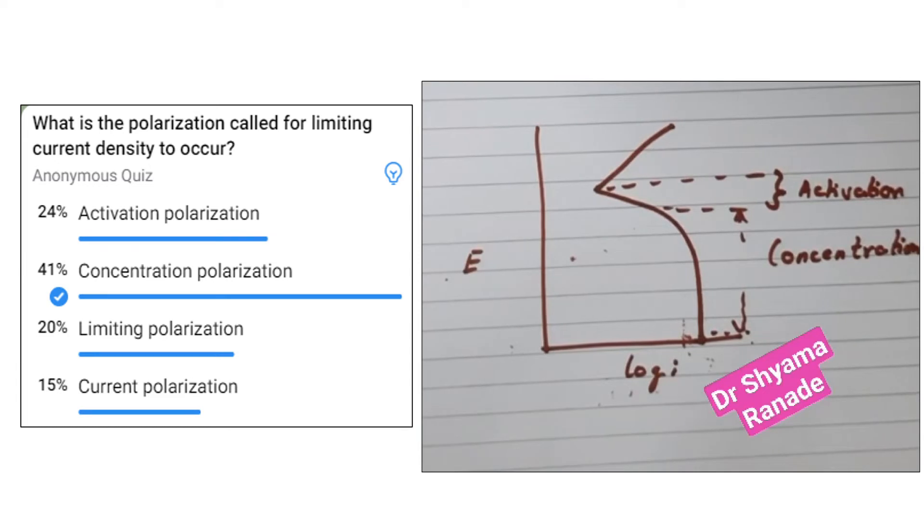The next question is, when does this concentration polarization happen? What are the likely conditions of this polarization happening? I will put the possible answers in the next post. Thank you.